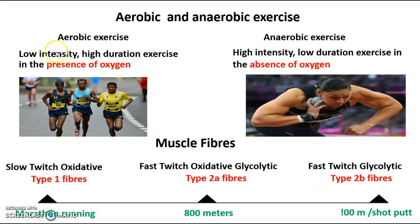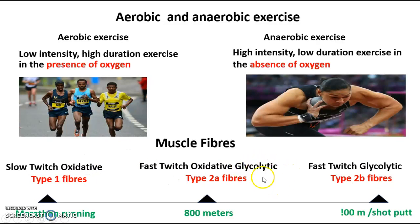In your Cornell notes, have the difference between aerobic and anaerobic exercise. You need to be able to identify the different fibre types — you can call them slow twitch oxidative or type 1, fast twitch oxidative glycolytic or type 2a, fast twitch glycolytic or type 2b. Make sure you have all three named with a corresponding sporting example, and that these are referenced in your Cornell notes.